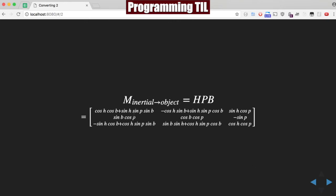So if you recall this formula from a previous episode, you can see a matrix from inertial to object space is HPB: heading, pitch, bank. What we're going to do is solve for P, H, and B.